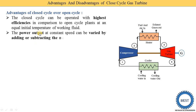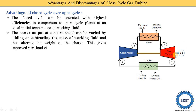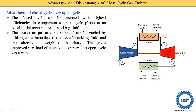The power output at constant speed can be varied by adding or subtracting the mass of working fluid, thus altering the weight of the charge. This gives improved part load efficiency compared to the open cycle gas turbine. Some provision is made so that working fluid can be added or removed — this refers to the working fluid circulating through the components, not the fuel being burned.